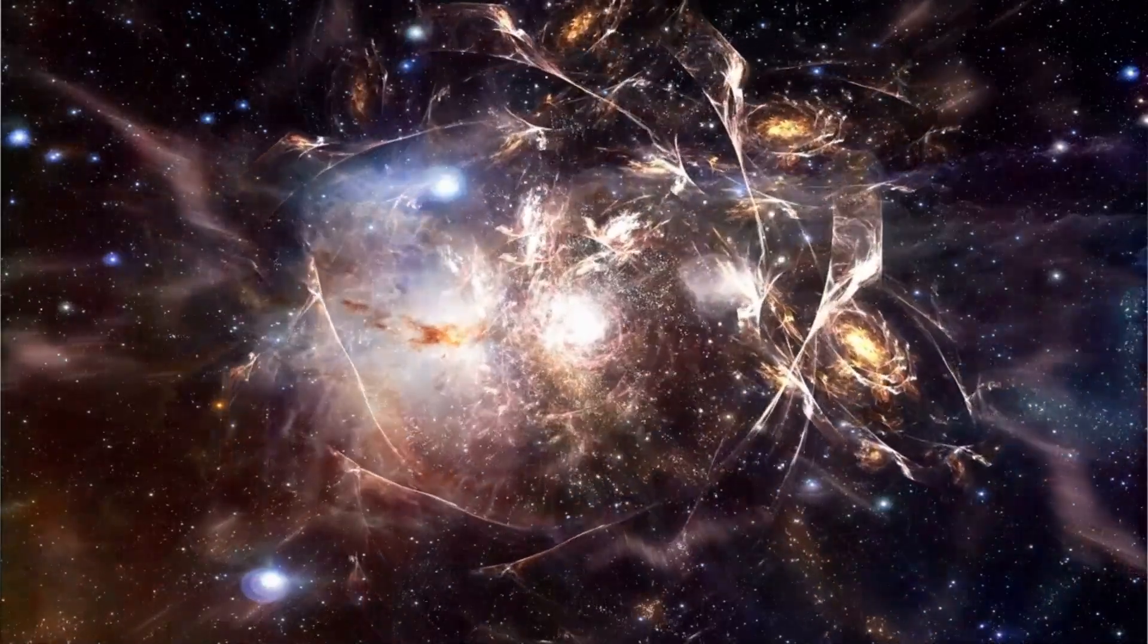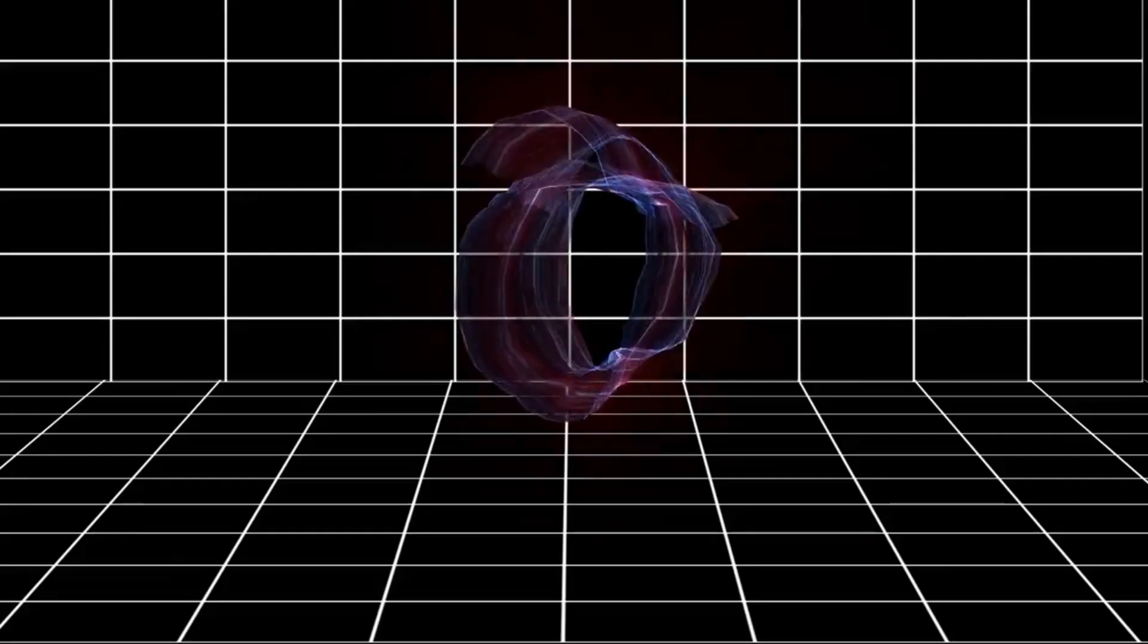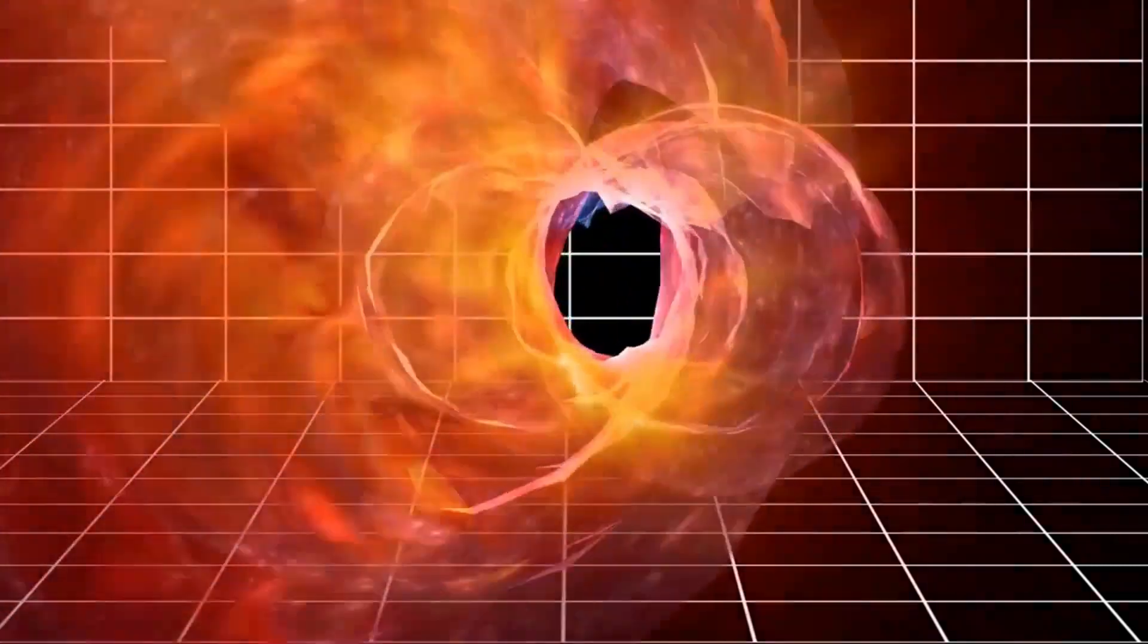The universe began expanding immediately after the Big Bang. Another drawback is stability. Predicted wormholes, like those spoken of in Einstein-Rosen models, are unstable and would be useless for travel.